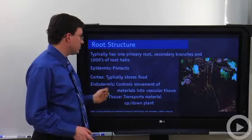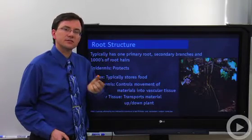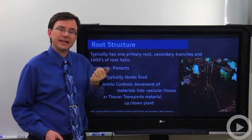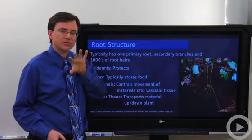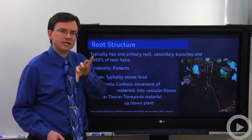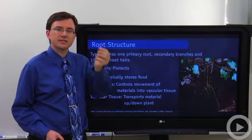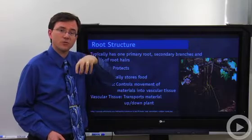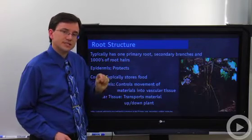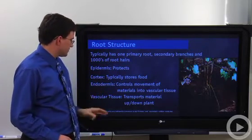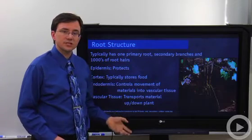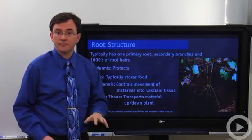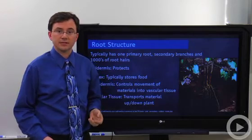Then there's the endodermis. That's a thin, single-celled layer that helps control what can come in and out of the vascular bundle. This is your last security station, essentially, and it has this layer called the Casparian strip, which forces materials out of the cell walls and across the cell membrane of the endodermis. Finally, you have the vascular tissue that helps transport materials up and down the entire plant.